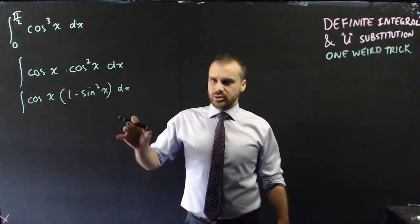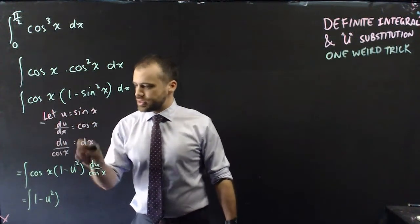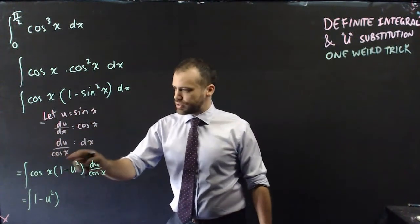Alright, so I'm going to just jump through the next little bit here. So jumping through, we let u equal sine x, the derivative is cos x.